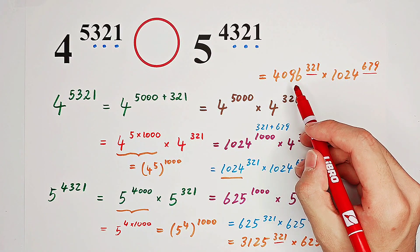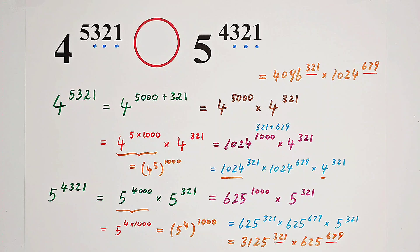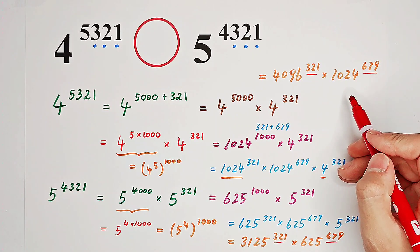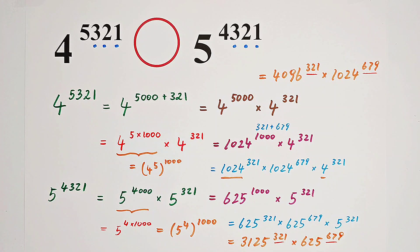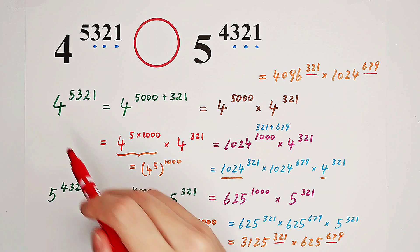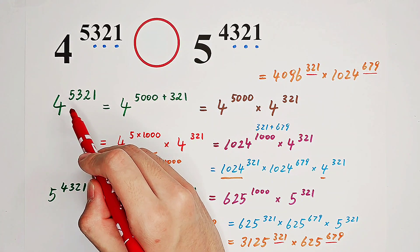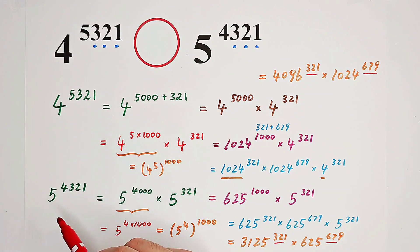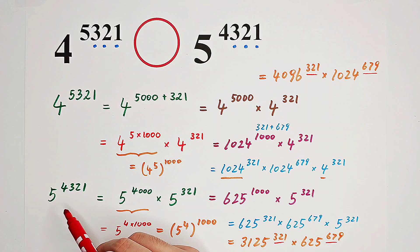And 4,096 is greater than 3,125. 1,024 is also greater than 625. Which implies 4 to the power of 5,321 is greater than 5 to the power of 4,321.